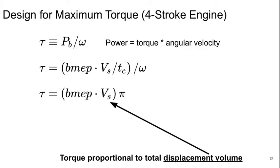To design for maximum torque, we can use the fact that the torque is just the power divided by the angular velocity. And so putting in the definition that we had on the previous slide, we can simplify and come up with that the torque is simply the mean effective pressure times the displacement volume times π. So the torque is proportional to the total displacement volume.